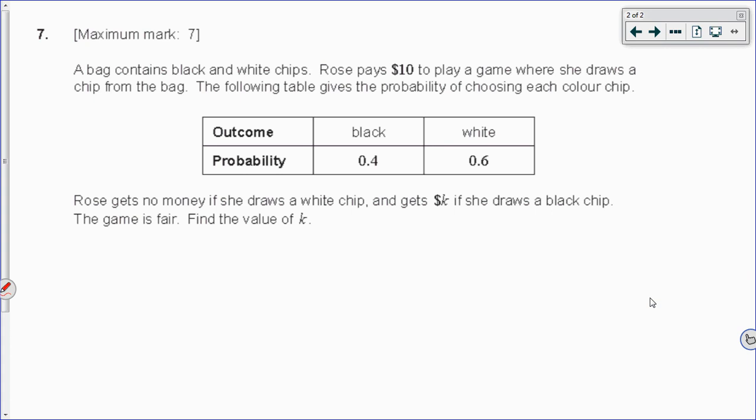A bag contains black and white chips. Rose pays $10 to play a game where she randomly draws a chip from the bag. She has a 0.4 probability of choosing a black chip and a 0.6 probability of choosing a white chip. She gets no money if she draws a white chip, and K dollars if she draws a black chip. The game is fair. Find the value of K.